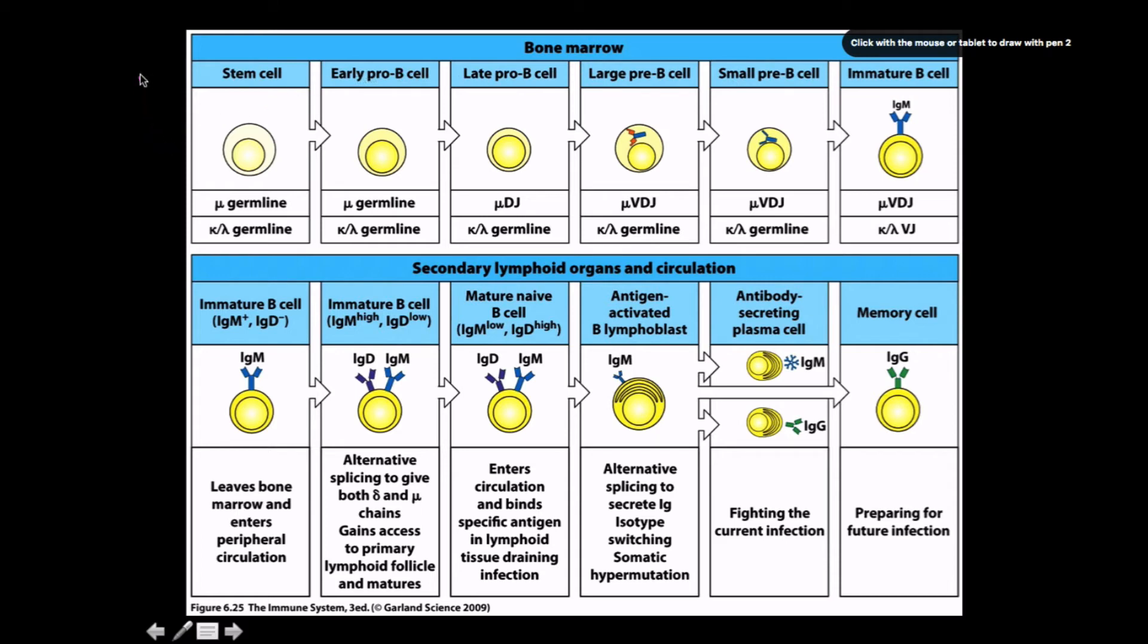Here's a diagram illustrating all the points we talked about. It tells us the germlines for each stage. Stem cell - everything's germline. Early pro-B cell - everything's still germline. By late pro-B cell, we've had D and J heavy chain recombination. By large pre-B cell, we have VDJ recombination. By small pre-B cell, light chain recombination is happening, giving us an immature B-cell. The immature B-cell leaves the bone marrow and enters peripheral circulation. Then the immature B-cell starts developing IgD, at least in low concentration, and gains access to primary lymphoid follicles, maturing further as it contacts T-cells and antigen-presenting cells.